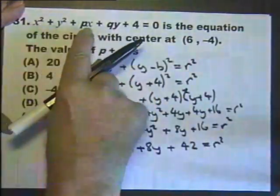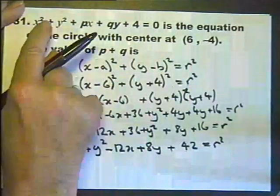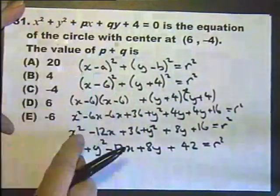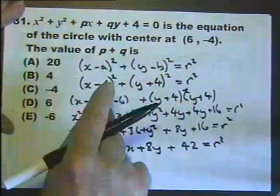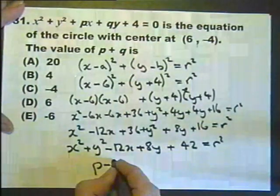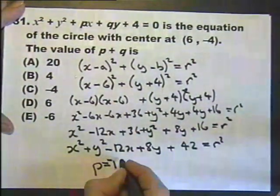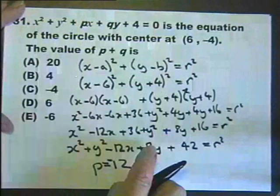It's looking extremely similar to that. There's the x squared, there's the y squared. So that means to say that p must be minus 12, and q must be plus 8.